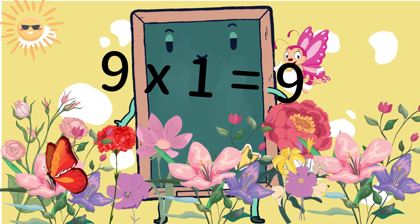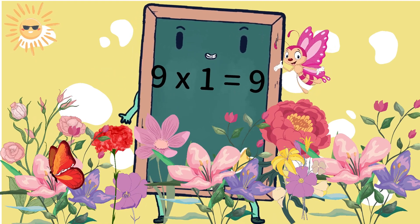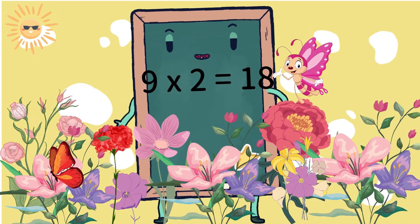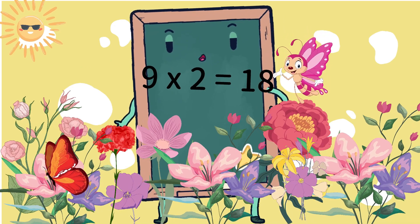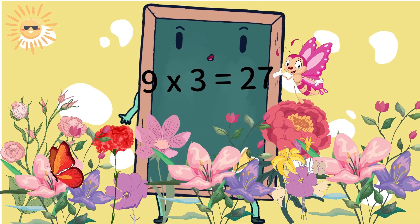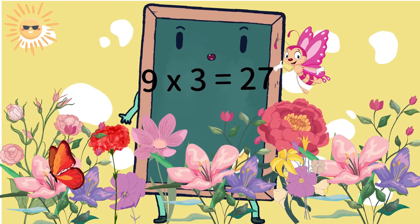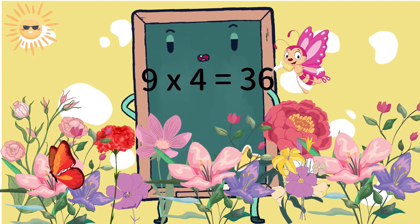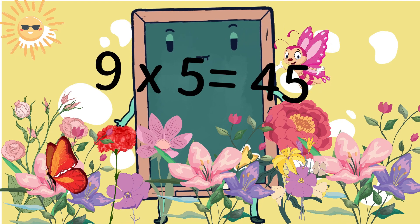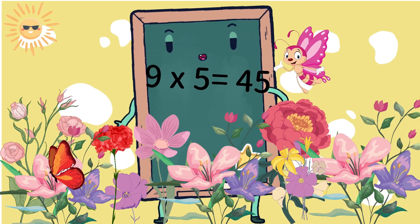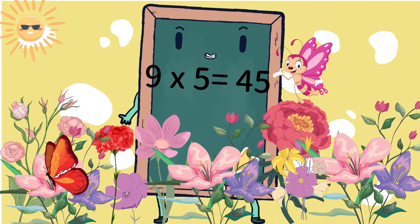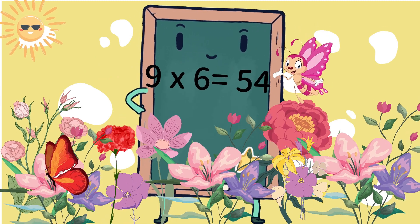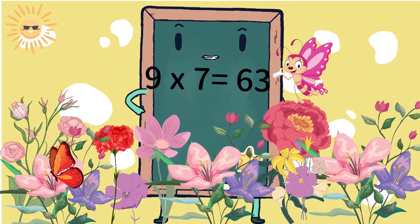9 × 1 = 9, 9 × 2 = 18, 9 × 3 = 27, 9 × 4 = 36, 9 × 5 = 45, 9 × 6 = 54, 9 × 7 = 63.